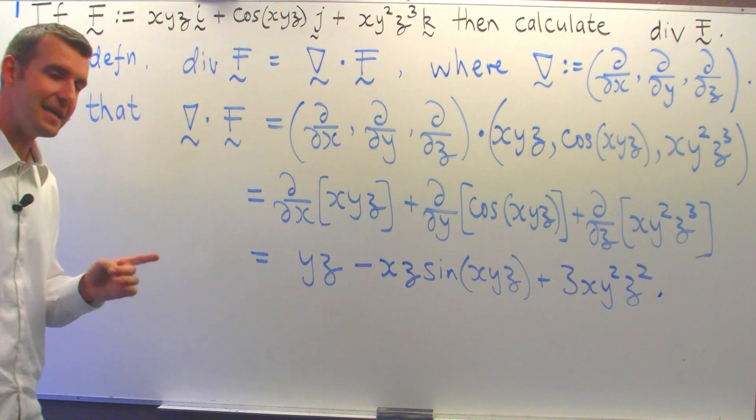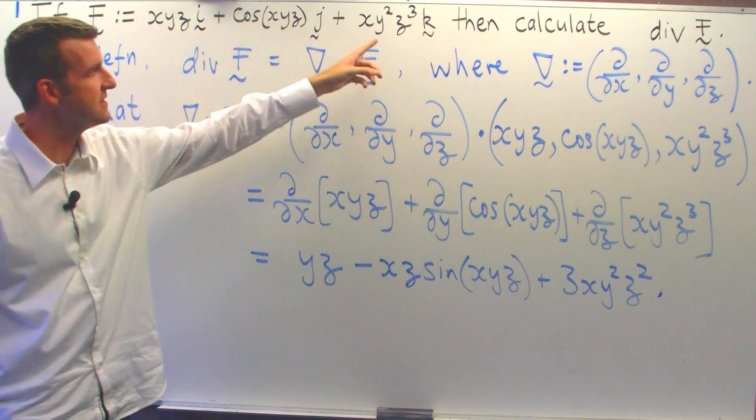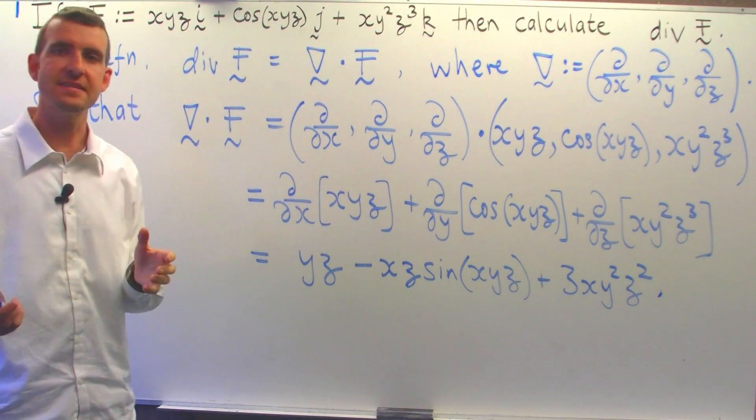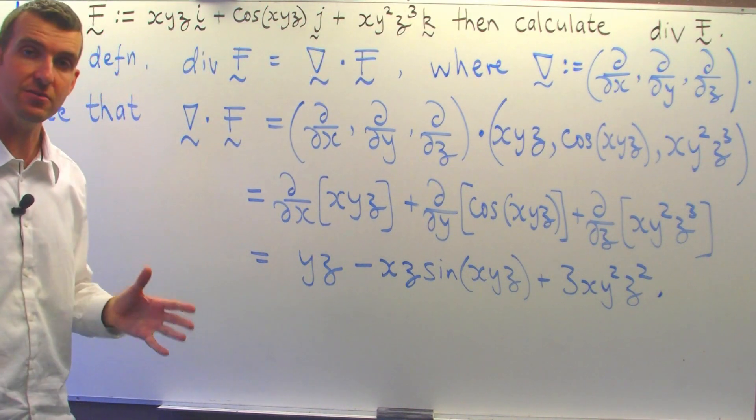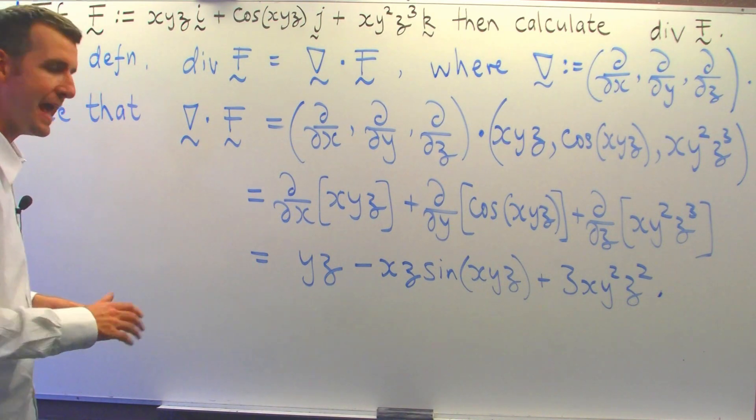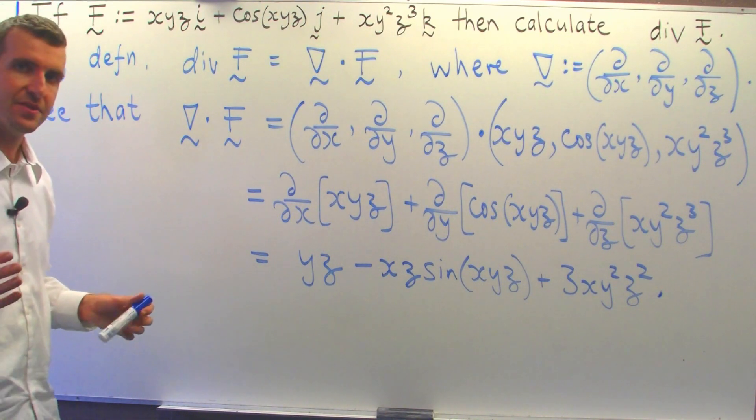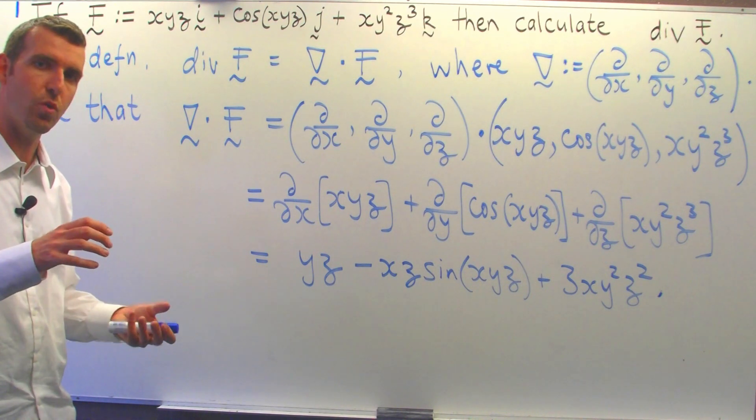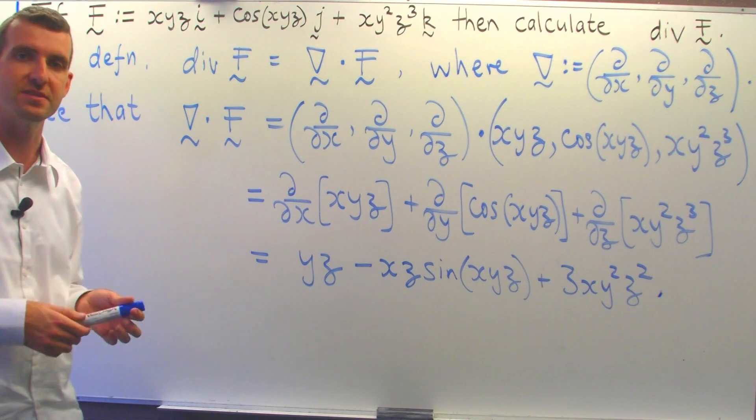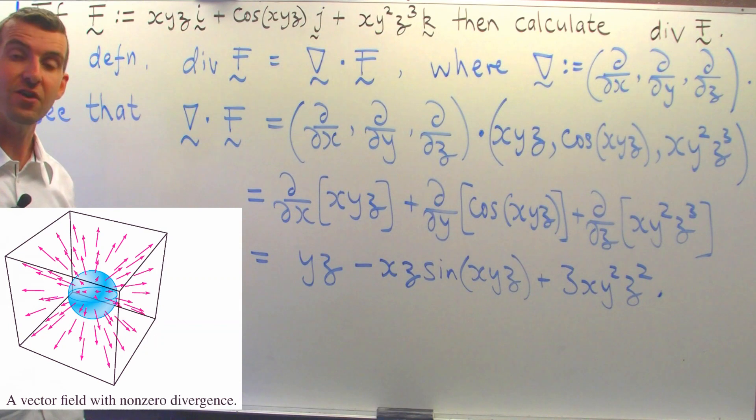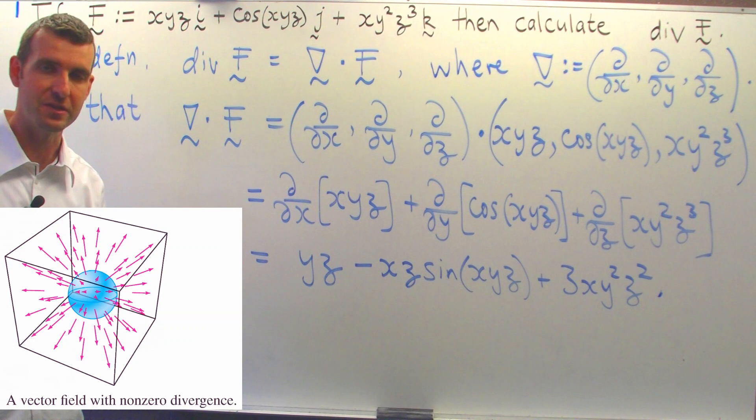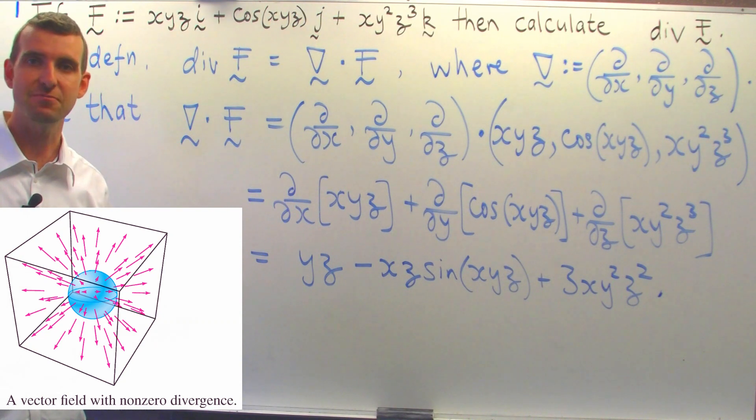So, if this vector field represents, say, the velocity field of a fluid or a gas, then at the origin, the gas is neither expanding or compressing because the divergence is zero there. If the divergence was positive, then you could interpret this as the gas was expanding at that point. If the divergence was negative, you could interpret that as the gas was compressing at that point.